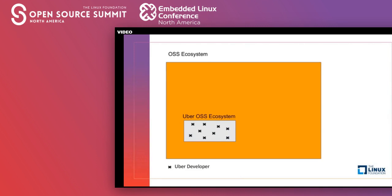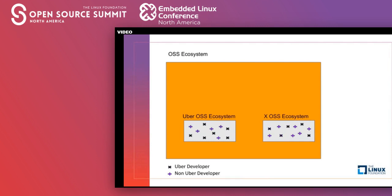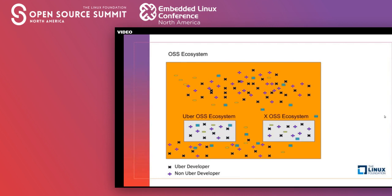If we have this big square representing the open source ecosystem, Uber is one of those actors. We have black crosses representing Uber developers, and then other organizations or companies working in other open source projects. The point is that if something is open source, it's easy to go to GitHub or GitLab and check what that organization or individual is doing there. What is happening nowadays is a bunch of Uber developers and ex-company developers working across many projects in addition to their own.